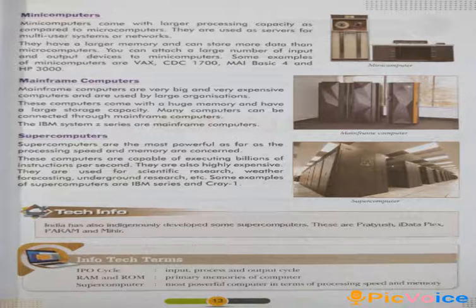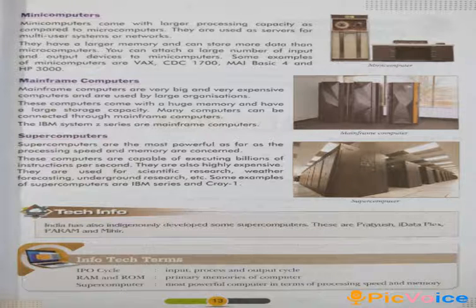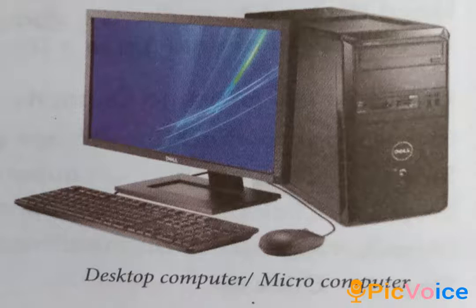The IBM System Z series are mainframe computers. Supercomputers: supercomputers are the most powerful as far as processing speed and memory are concerned. These computers are capable of executing billions of instructions per second. They are also highly expensive and are used for scientific research, weather forecasting, and underground research. Examples of supercomputers are IBM series and Cray One.